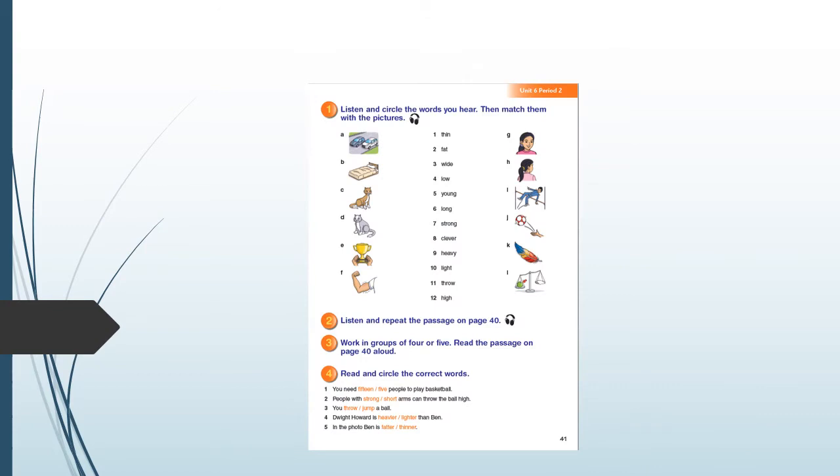This is our lesson for today. It is Period 2, Unit 6, Basketball. In this lesson, we're going to answer some questions. First, we're going to listen and circle the new words in the text. Then, we're going to match words with pictures. And the last thing we are going to do is circle the correct words in the sentences. Ready? Let's start.